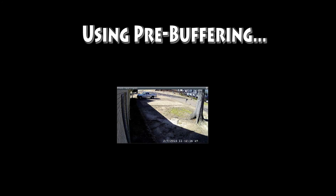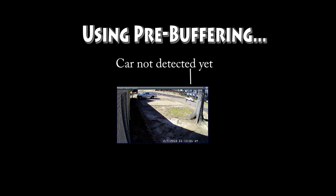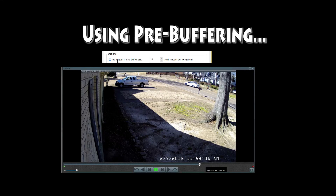Another tip is pre-buffering. If you see that car go by, you'll notice that the red square doesn't appear until it's way past that mailbox — it takes a while for the car to be detected. So if you pre-buffer a few frames, it hadn't even started recording there, but if we back it up and review the recording, you'll see it's pre-buffered so it actually detects the car well before that tree.